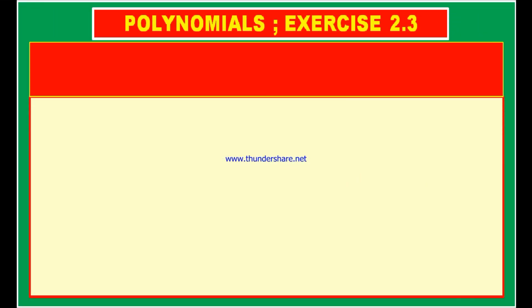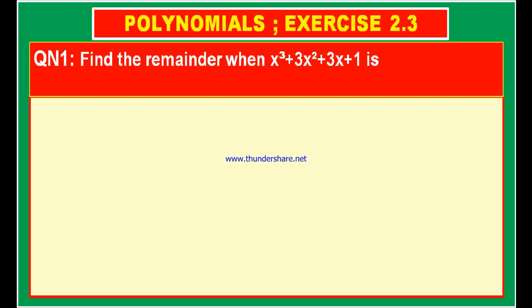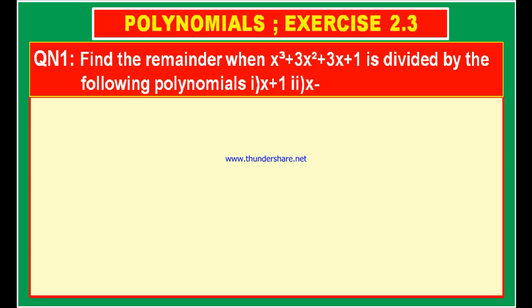Dear children, here is the chapter Polynomials, exercise 2.3, question number 1. Find the remainder when x cube plus 3x square plus 3x plus 1 is divided by the following polynomials: first bit is x plus 1, second bit is x minus 1 by 2, third bit is x, fourth bit is x plus pi, and fifth bit is 5 plus 2x.